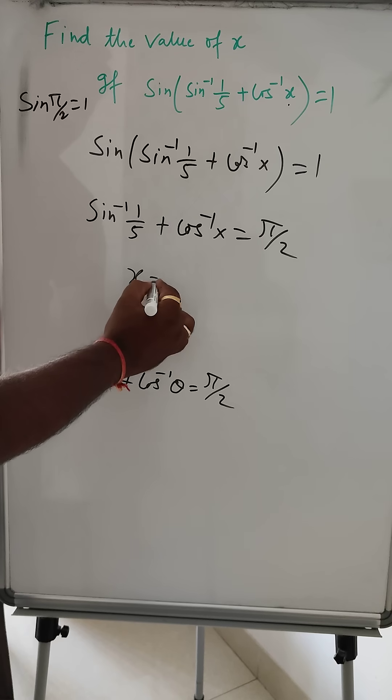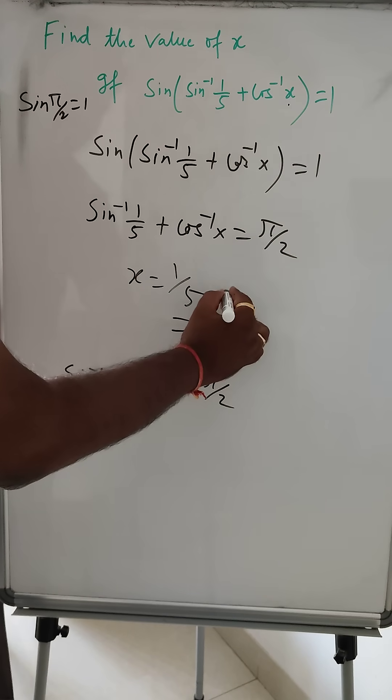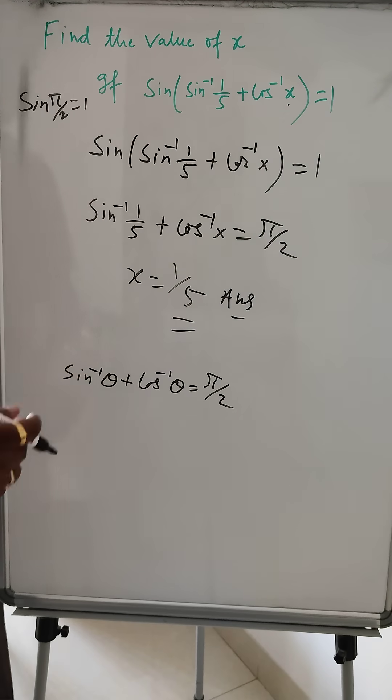So x is equal to 1 by 5, and that is the answer. Basically, this question comes in MCQ format. Thank you for watching. Please like and subscribe.